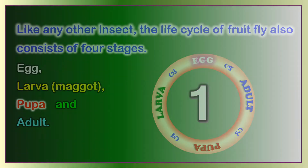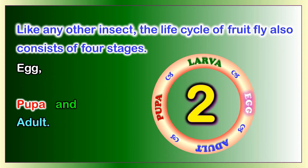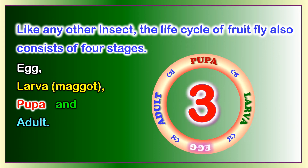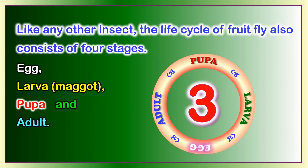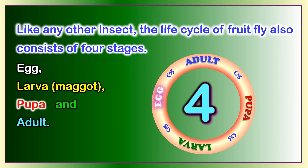Like any other insect, the life cycle of fruit fly also consists of four stages: eggs, larva or maggot, pupa, and adult.